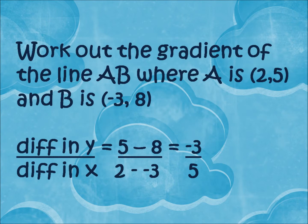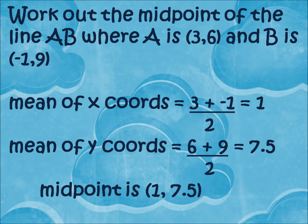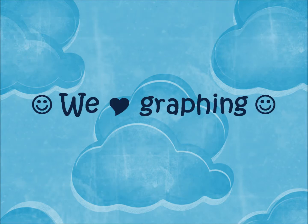Now to work out the gradient, if you've got two points on the line, do a difference in y by difference in x. Be careful of minus signs. Or if you want the midpoint of the line, then find the means of the coordinates. You will be just fine.